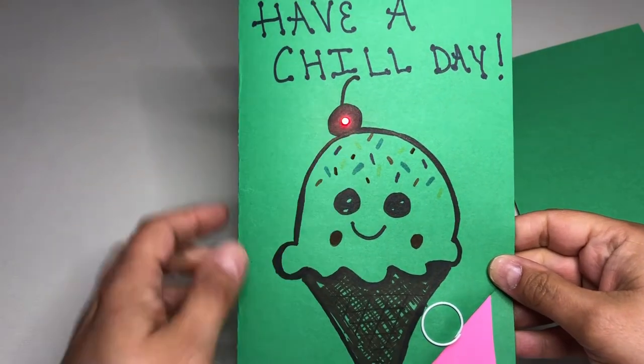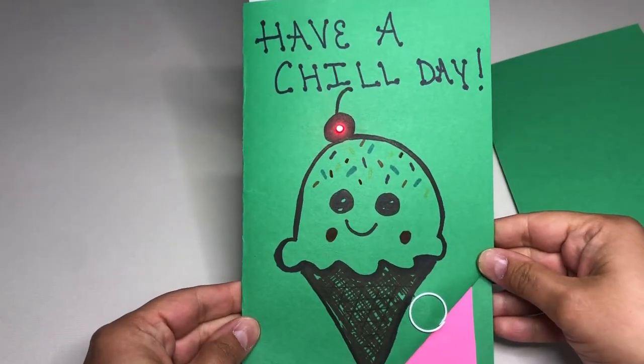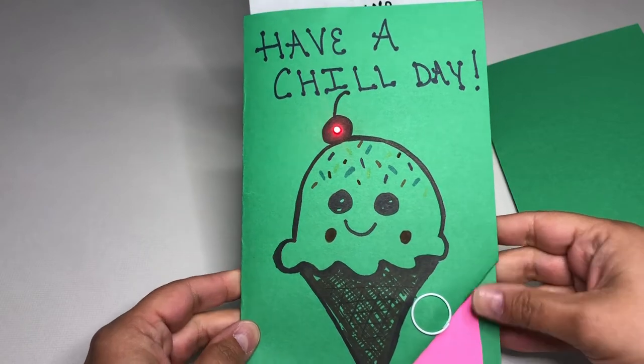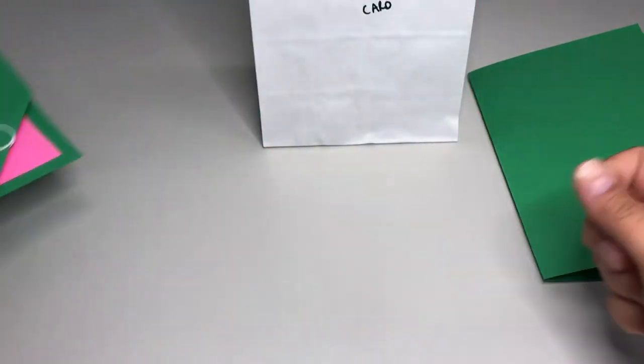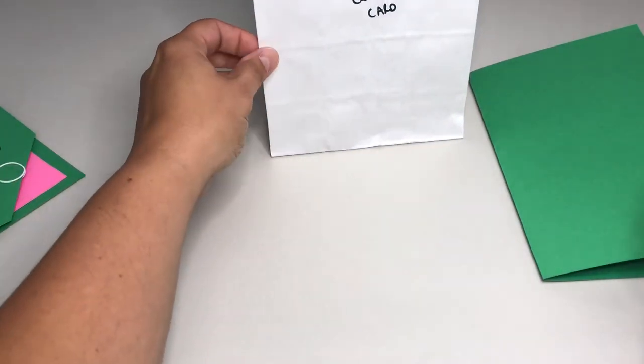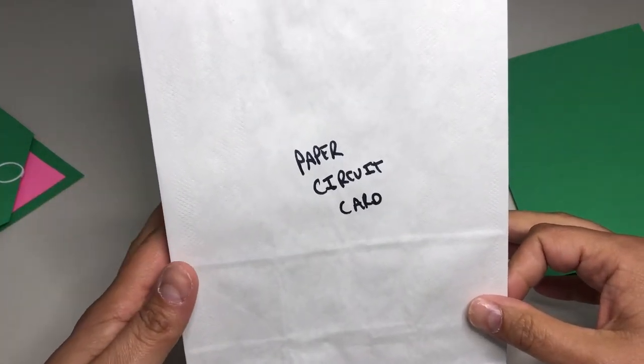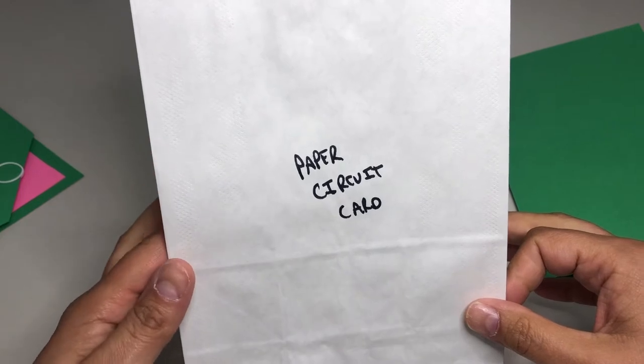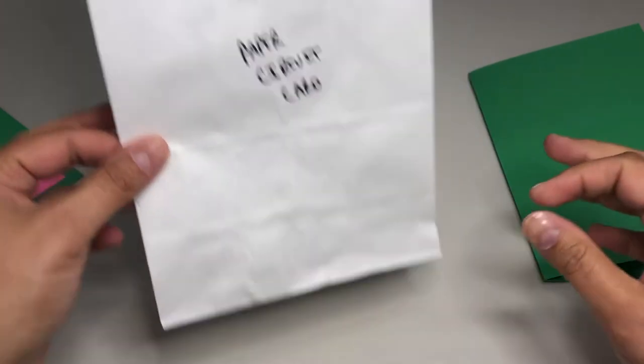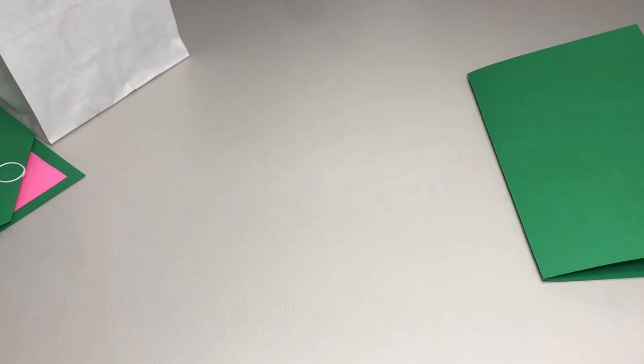You can see my LED light is my cherry on my ice cream cone that says have a chill day. You will register on the Crystal Lake Public Library's calendar and then pick up a bag with all the supplies needed from the library at the services desk and let's get started.